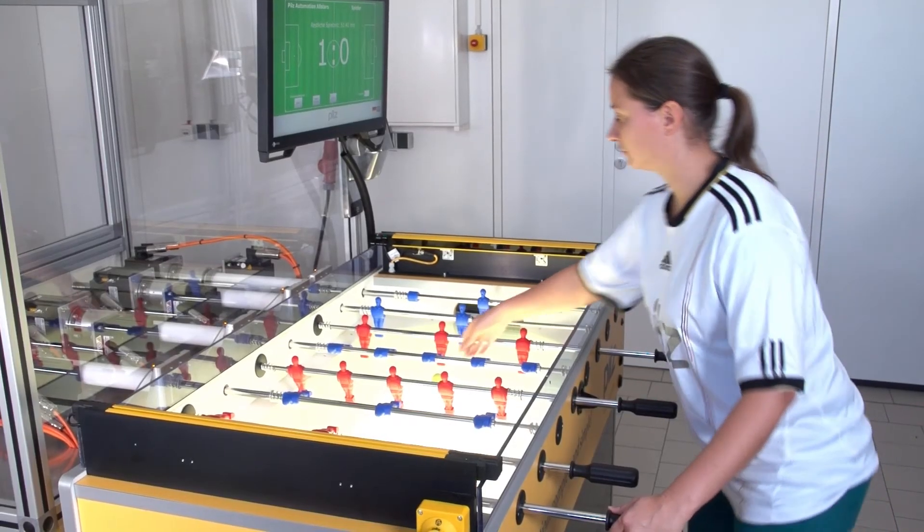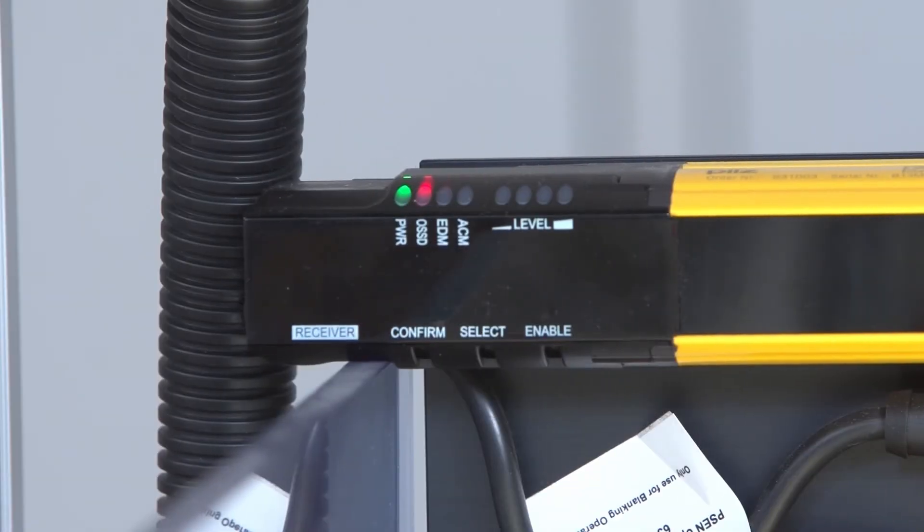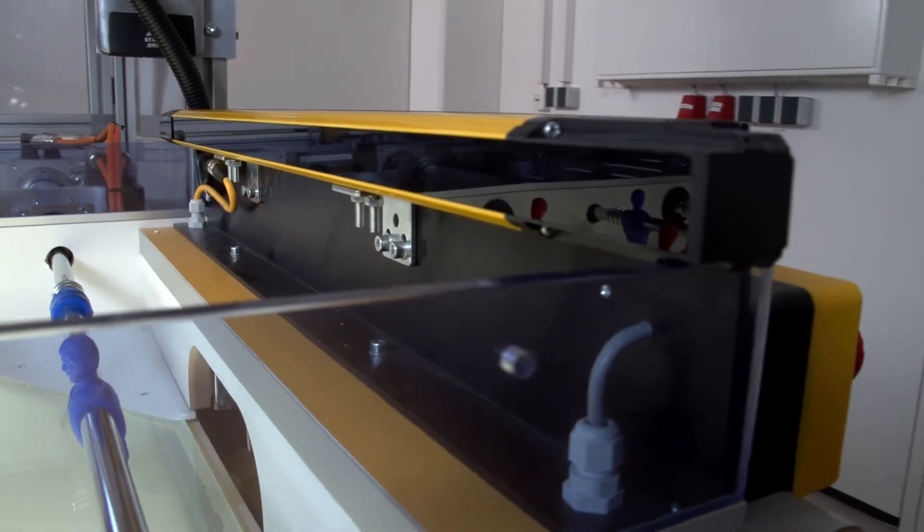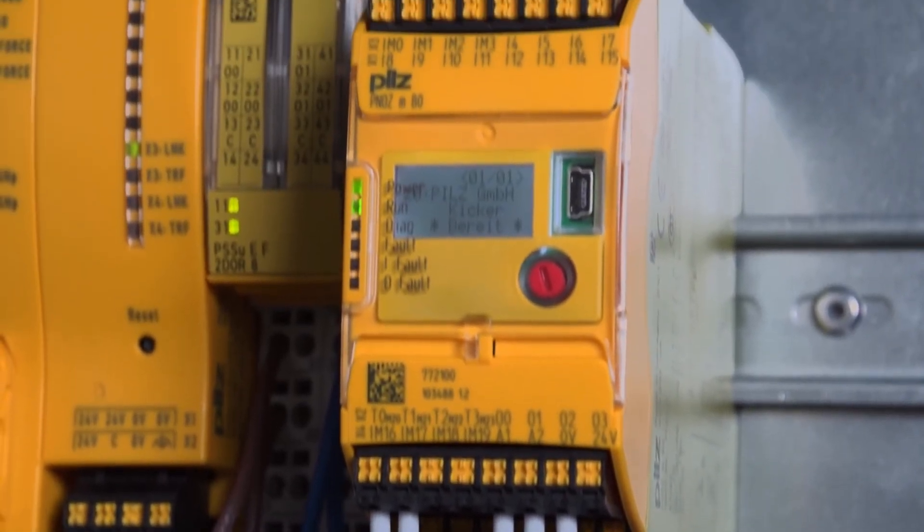Information such as the unwanted intervention of a player into the game situation is forwarded by the light grid's PsenOpte to the configurable control system PNOTS Multi 2, which stops the Robo-Kicker safely.